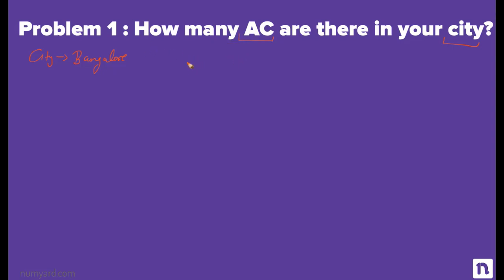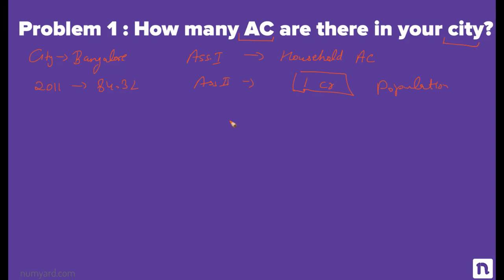Let's assume the interviewer is talking about household ACs — that is assumption one. The population of Bangalore in 2011 was around 84.3 lakhs. Taking assumption two, the current population in 2020 is one crore. Since Bangalore is the IT hub, we can assume 80% of the population are tenants and 20% are landlords or permanent residents. So 80% of one crore is 80 lakhs (tenants) and 20% of one crore is 20 lakhs (landlords).